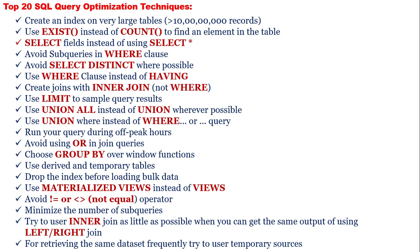The top 20 SQL query optimization techniques. Number 1: Create an index on very large tables, over 10 million records. More than 1 million records should be fine. Number 2: Use EXISTS instead of COUNT to find an element in the table.